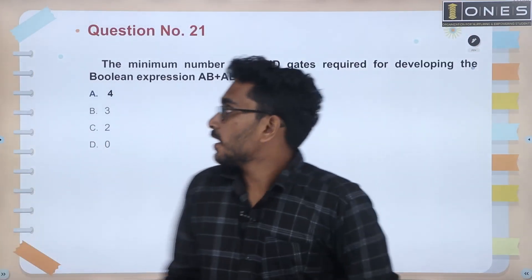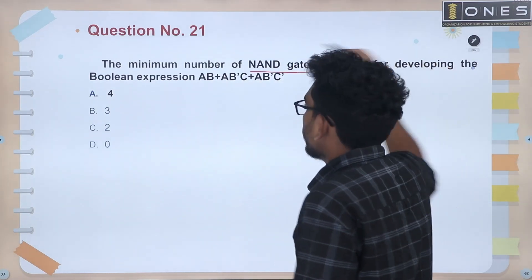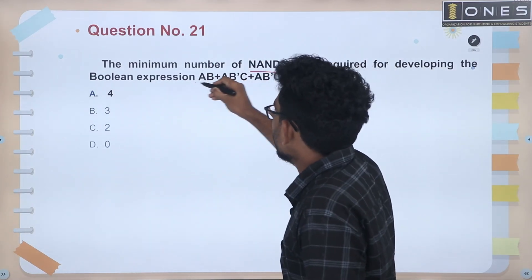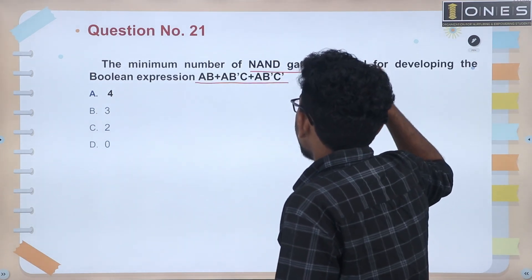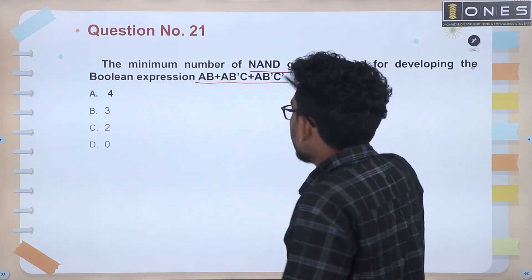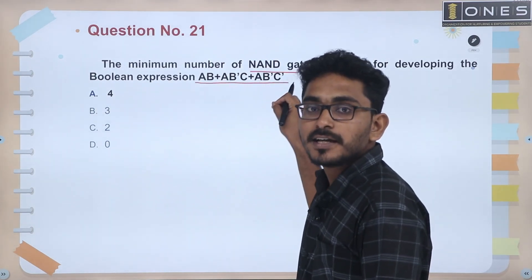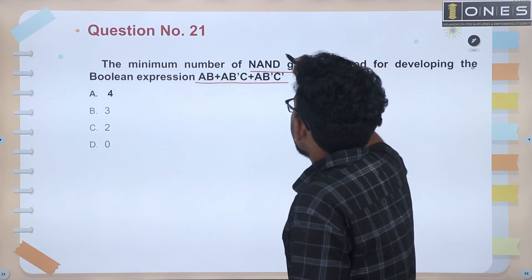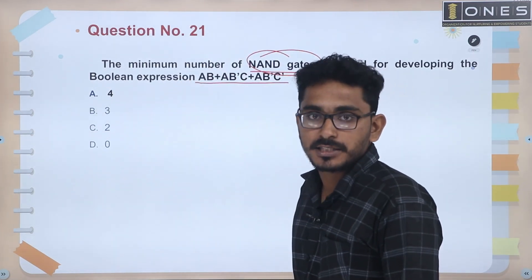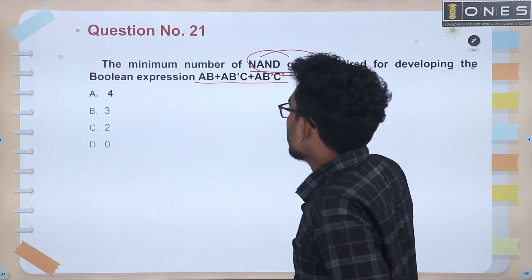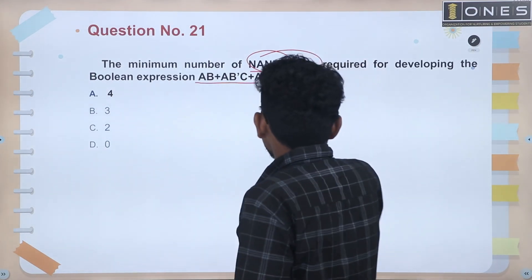The question is: the minimum number of NAND gates required for developing the Boolean expression AB plus AB̄C plus AB̄C̄. This Boolean expression is realized — how many NAND gates are required? We will go ahead and simplify this equation.